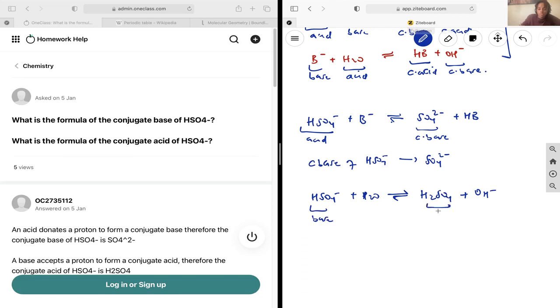This would mean that because this is our base, this is going to be our conjugate acid. So the conjugate acid of HSO4- is going to be sulfuric acid, and that's it.